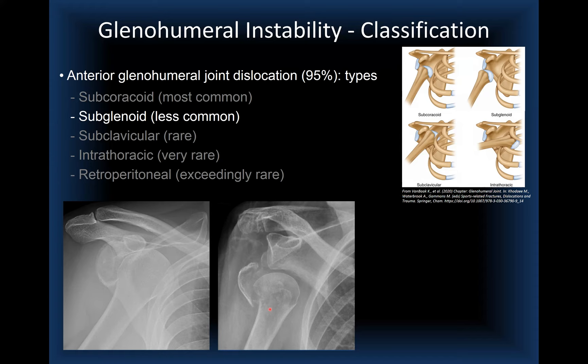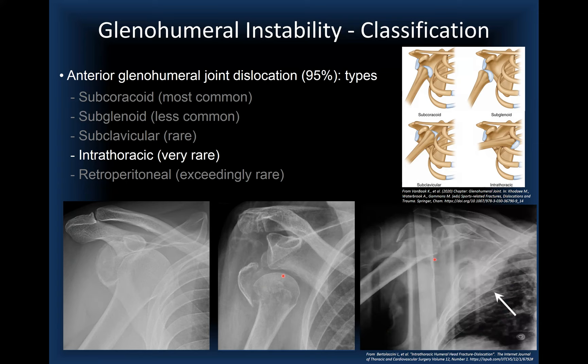The subglenoid variant, where the humeral head is beneath the inferior glenoid rim, is frequently associated with greater tuberosity fractures. A rare case from the literature shows an intrathoracic fracture-dislocation, where the humeral head is dislocated intrathoracically, visible on both plain film and CT.